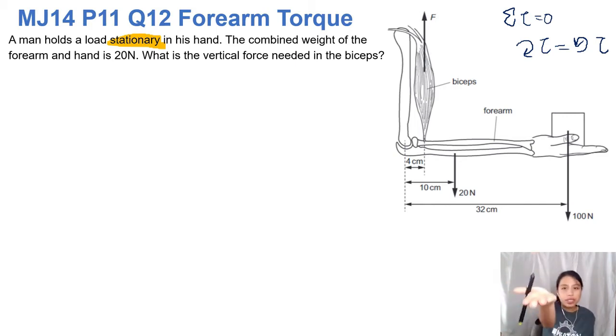So how can we calculate this? We need a vertical force. You see a diagram like this, don't panic, it's the same thing as what we looked at earlier. You have a rod, you have the weight of the arm plus the hand, so that's given to us as 20 newtons.